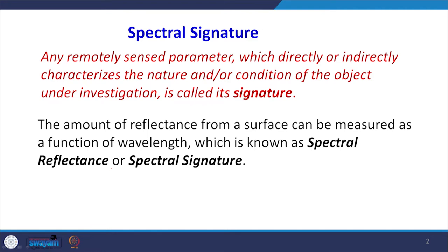All the objects which we identify from remote sensing images are identified on the basis of their signature — the amount of reflectance. Each object is reflecting certain energy back to the sensor. This energy is measured by the sensor as a function of the wavelength, and that spectral reflectance or spectral signature is very useful to distinguish the different types of objects present on the earth's surface.